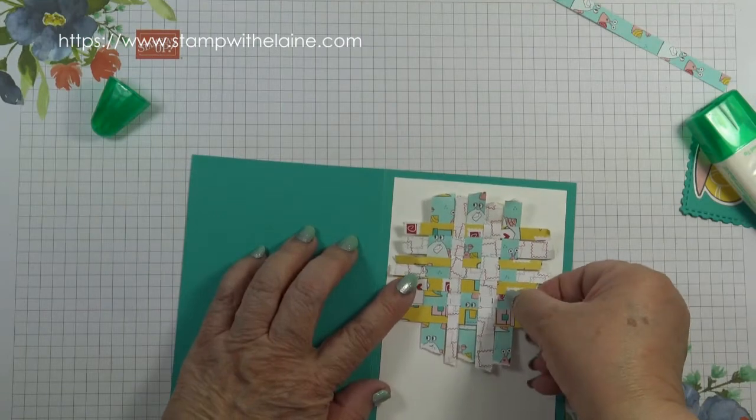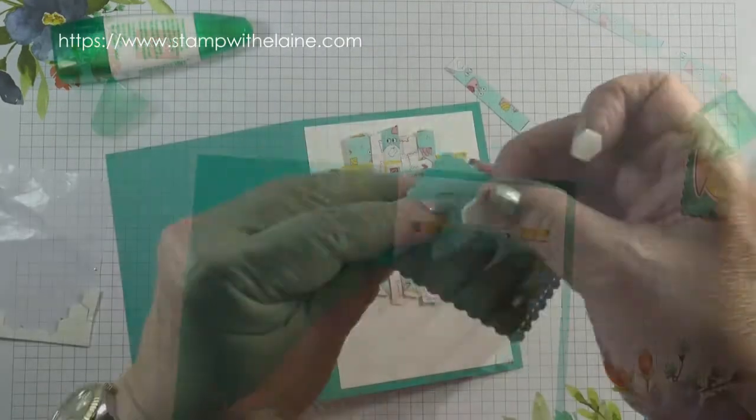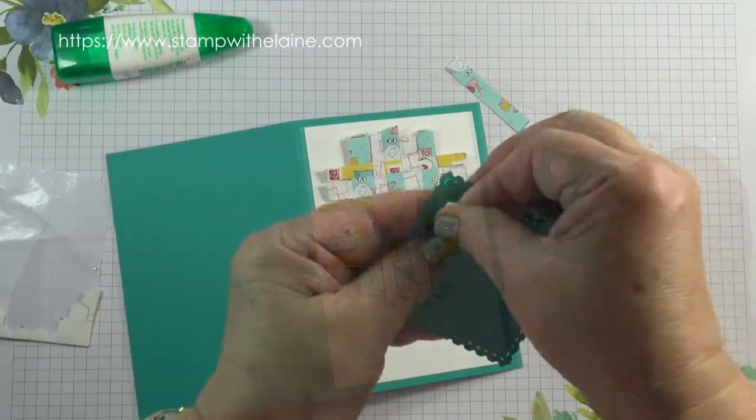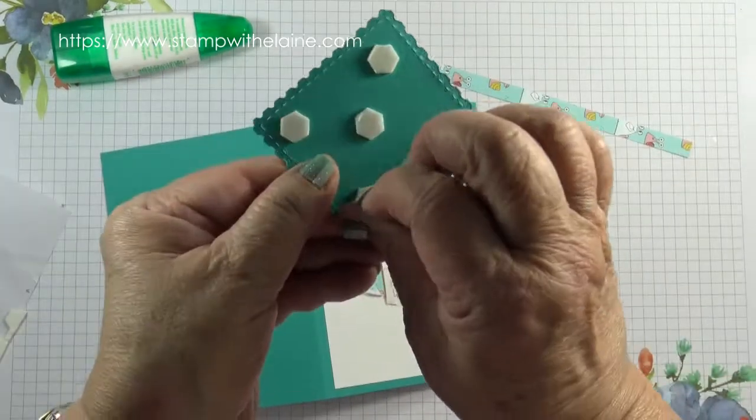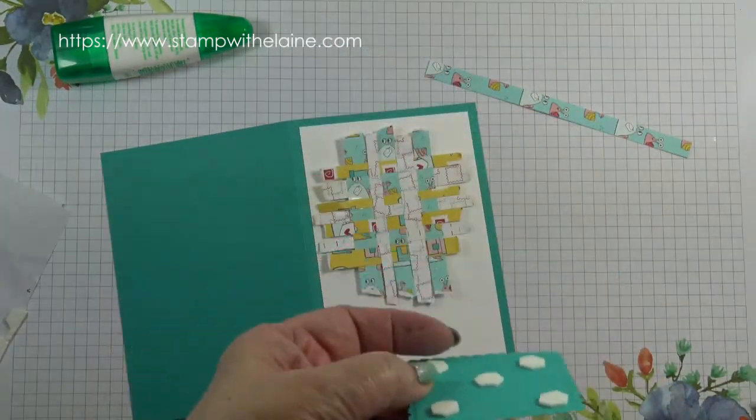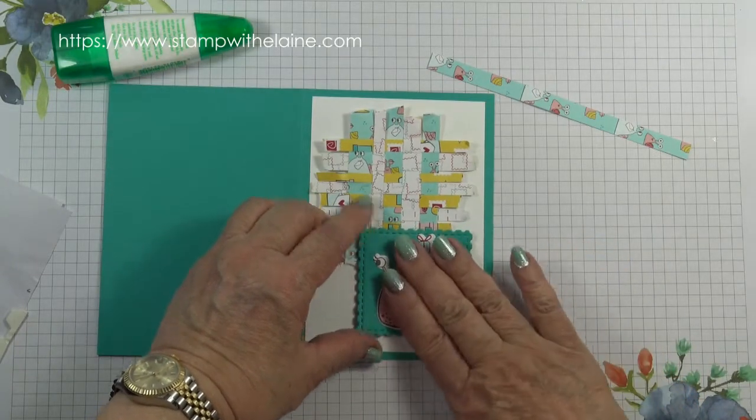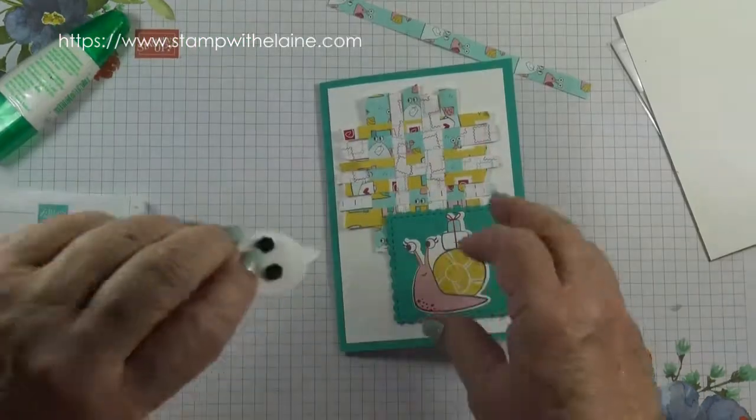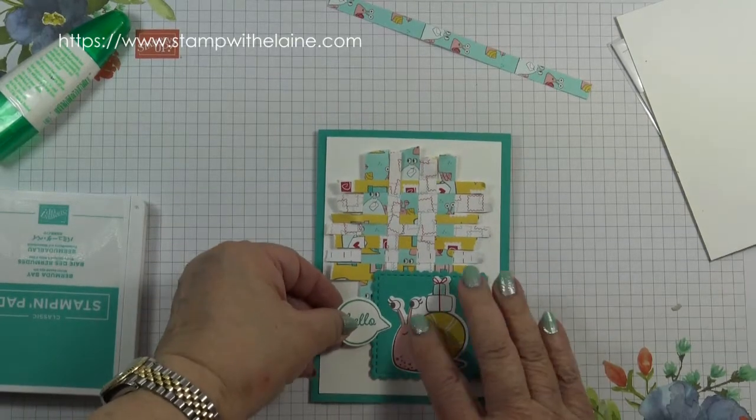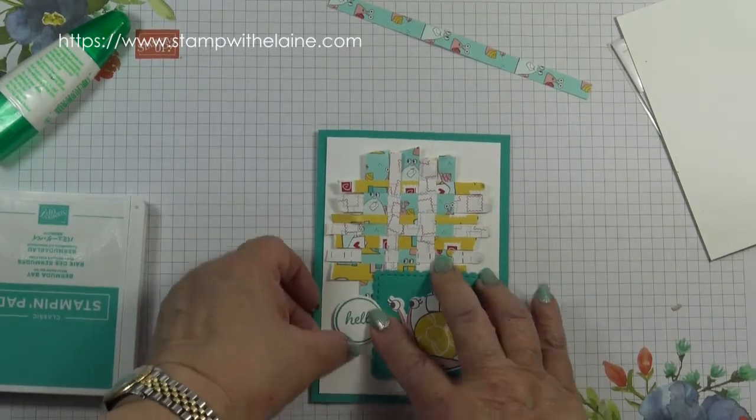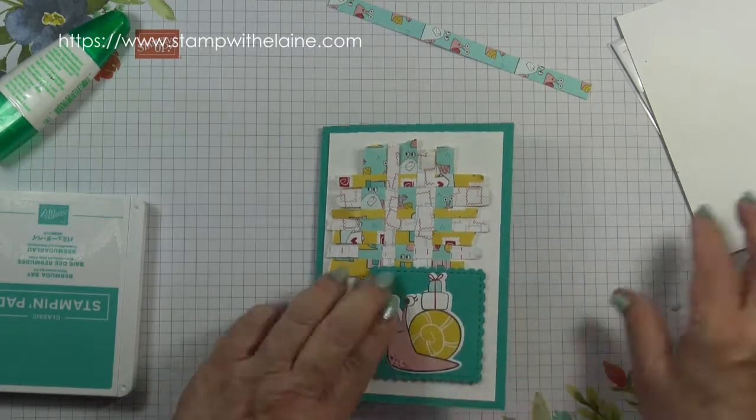Just around about there. Dimensionals on the back. Remove all the backing pieces from the dimensionals. Put that down here. So I'll put dimensionals on the back and I'll pop that on.